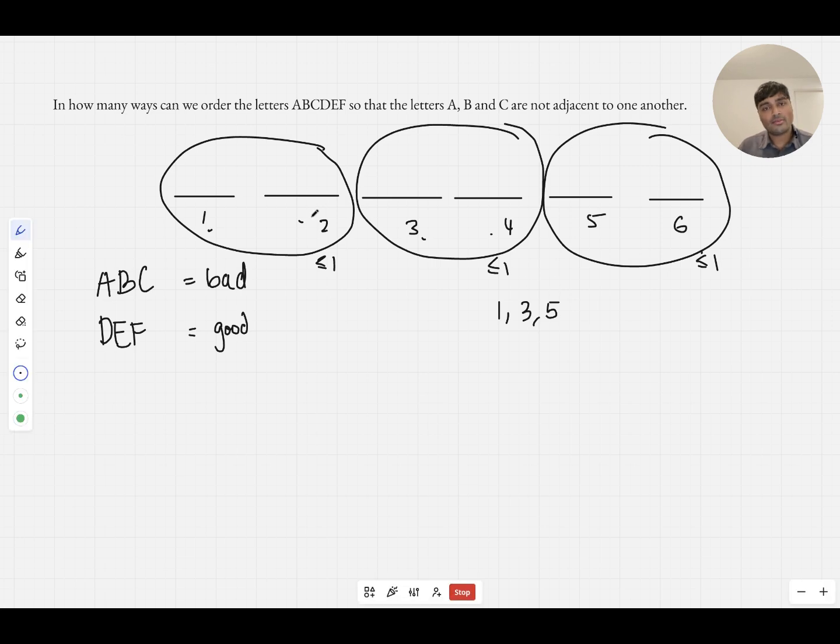So one possibility is one, three, five. If I keep going with one for the time being, I could have one, I could choose three and six. That works for positioning my bad letters.